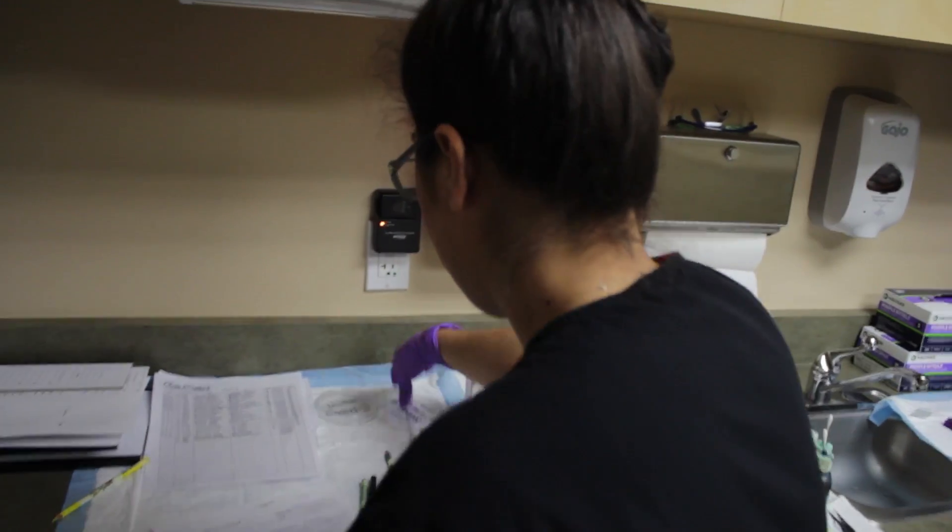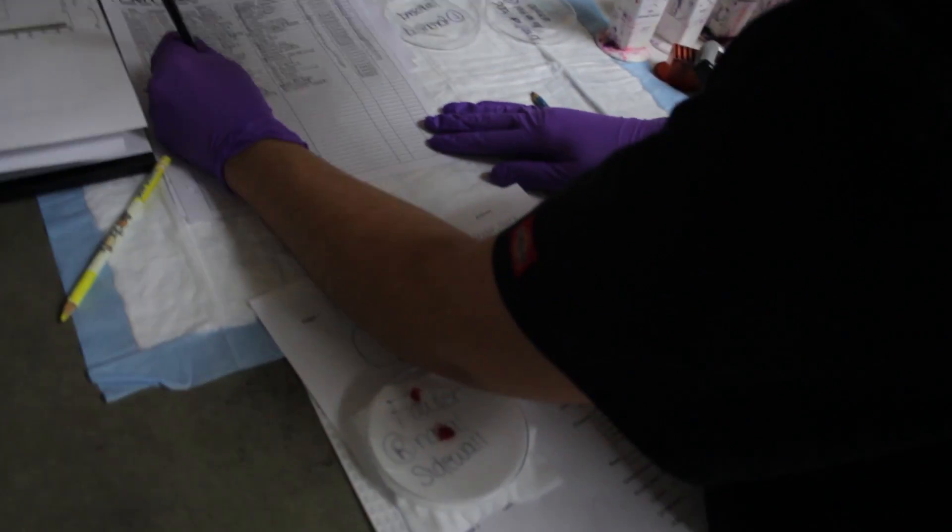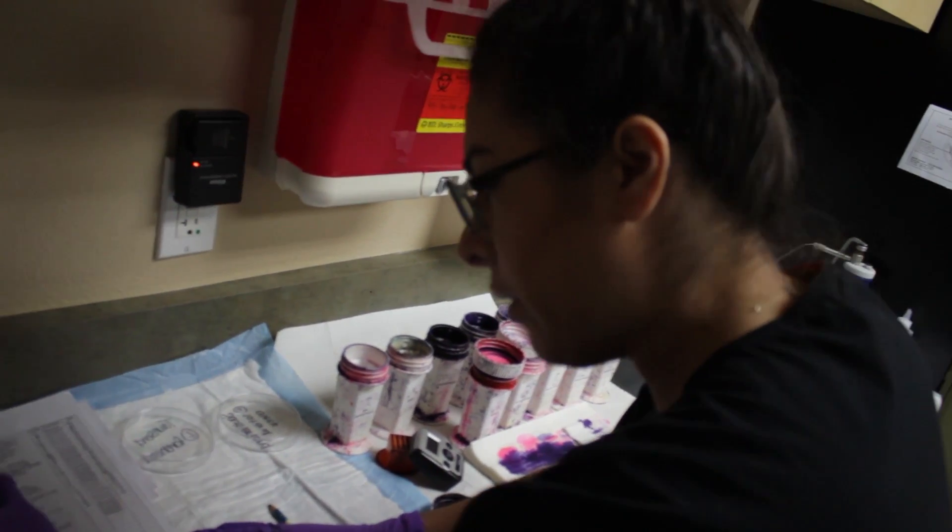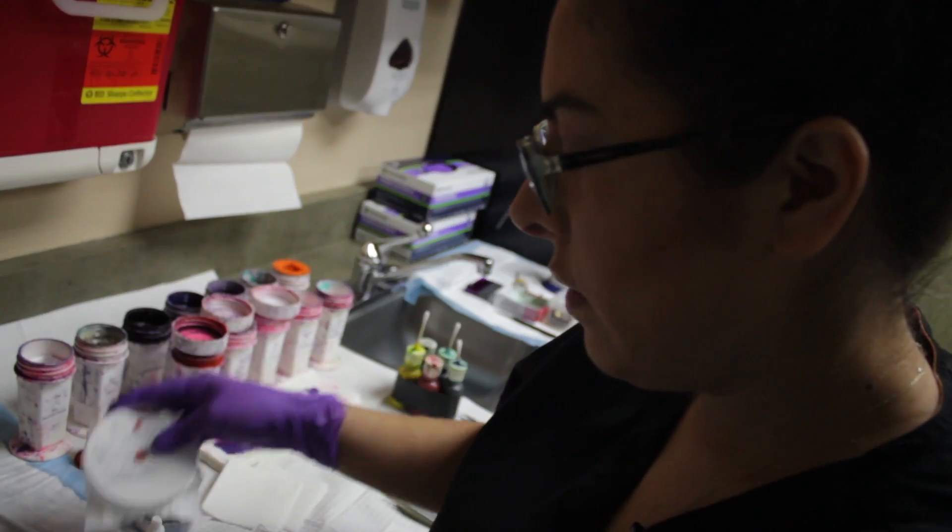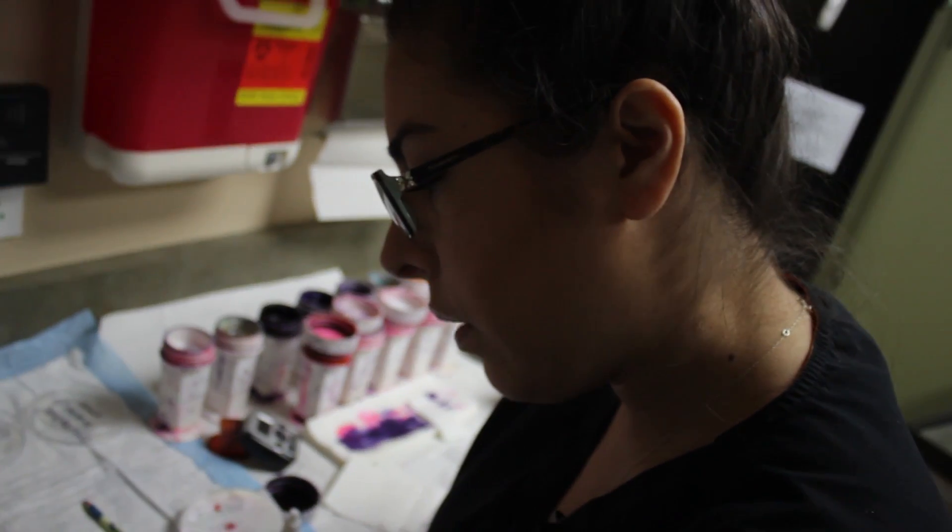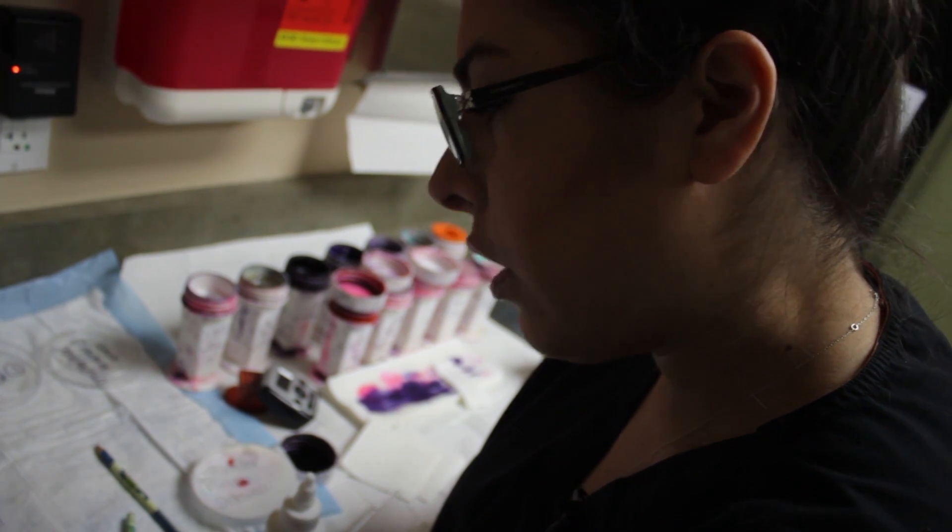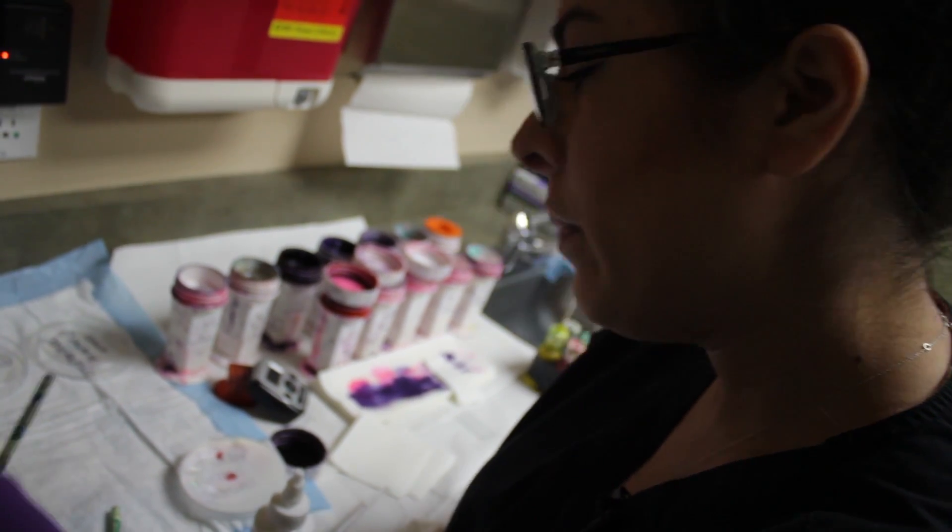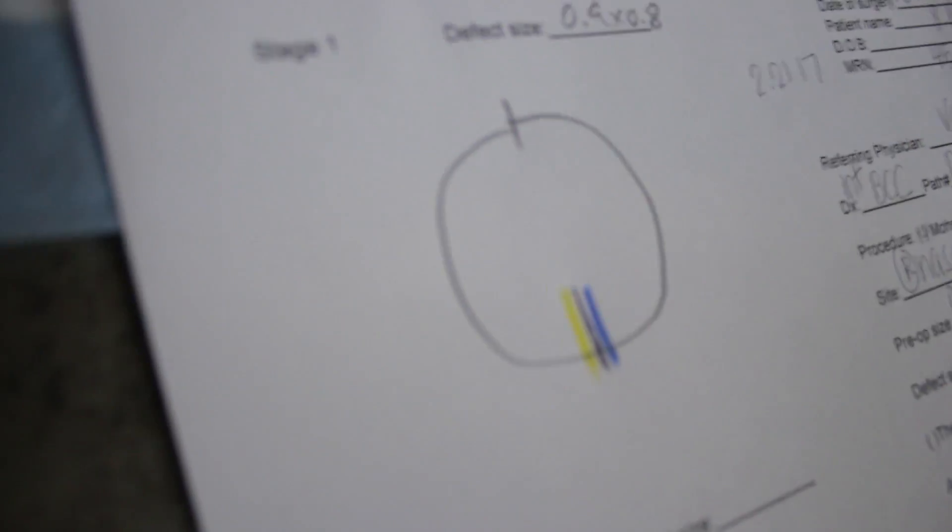So what I'm going to do is log the patient into the logbook and I also assign the patient an accession number. And then just to keep the orientation of the tissue, I'll map the tissue and how I'm going to ink it so the doctor knows what's top and bottom and left and right. So I'll do yellow on the left, blue on the right when I ink the tissue.